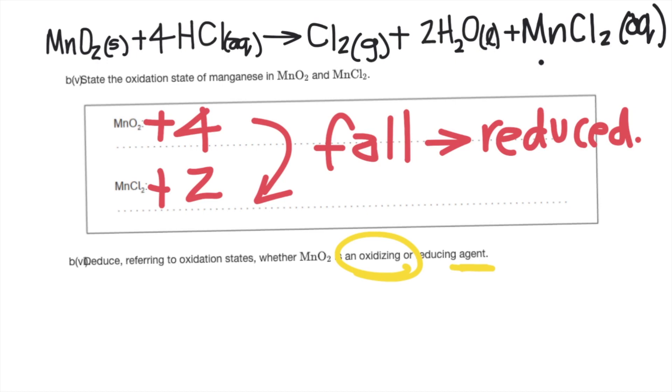A fall in oxidation number of a species always means that that particular species is reduced, and whatever entity undergoes reduction, some other entity has to undergo oxidation. But the entity that undergoes reduction is always characterized as being the oxidizing agent. So MnO2, which undergoes a fall in oxidation state to become MnCl2, that particular manganese atom is undergoing reduction but MnO2 is an oxidizing agent. Whatever thing undergoes reduction is an oxidizing agent and whatever thing undergoes oxidation is a reducing agent. Reduction is a fall in oxidation state and oxidation is an increase in oxidation state.